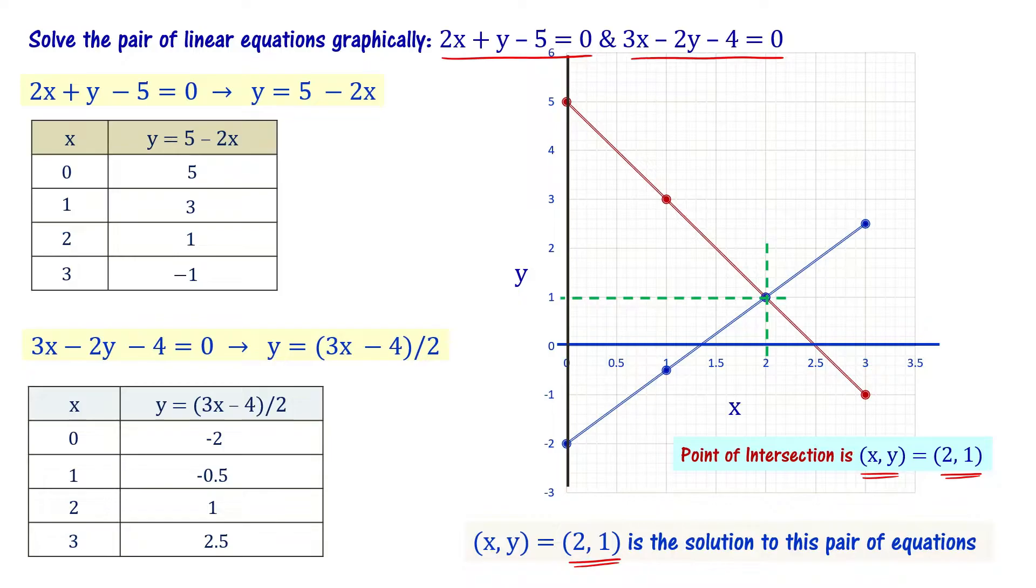To confirm that (2, 1) is the correct solution, take x = 2 and y = 1 and substitute in the first equation: 2(2) + 1 - 5 = 4 + 1 - 5 = 0, which equals the right-hand side. So this satisfies the first equation. You should also check whether (2, 1) satisfies the second equation. If the left-hand side value equals zero, it matches. Understood?